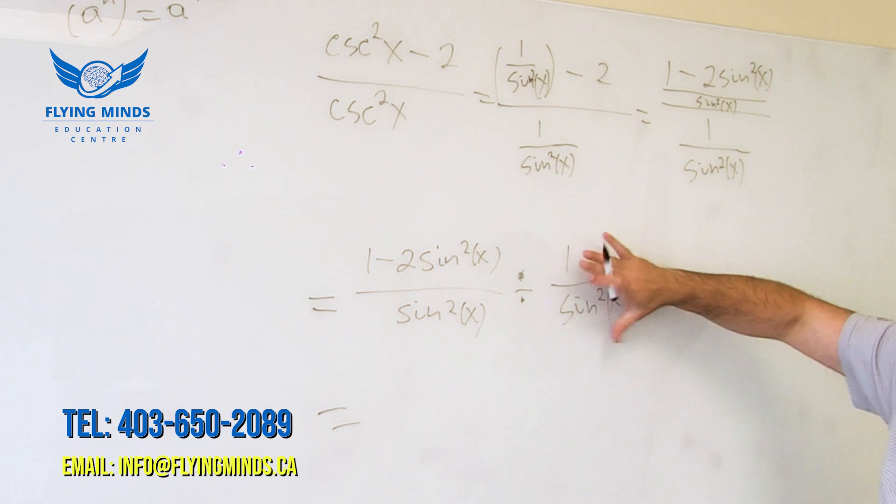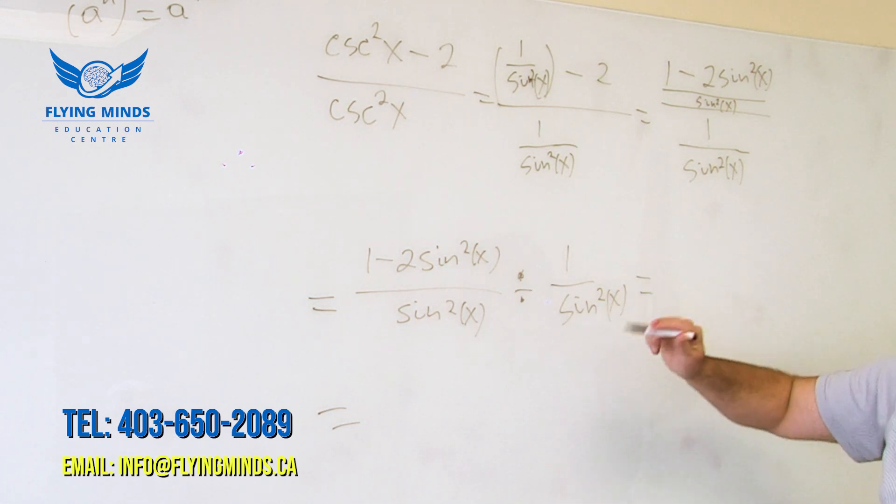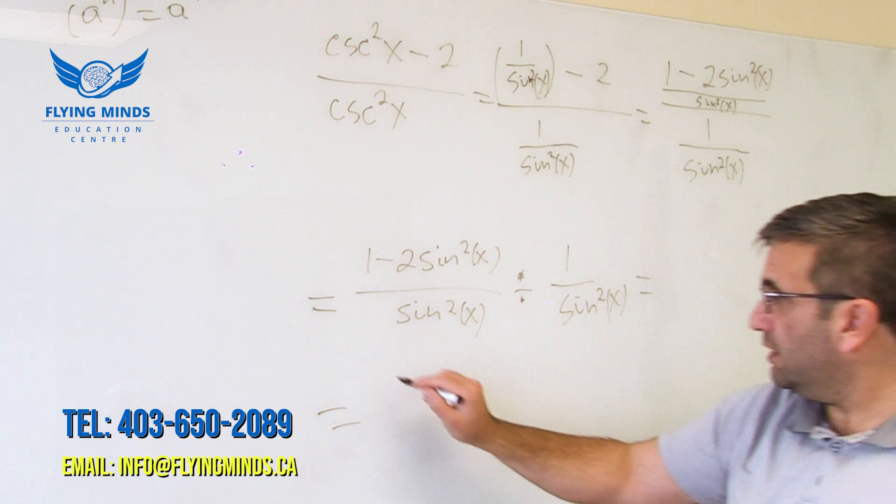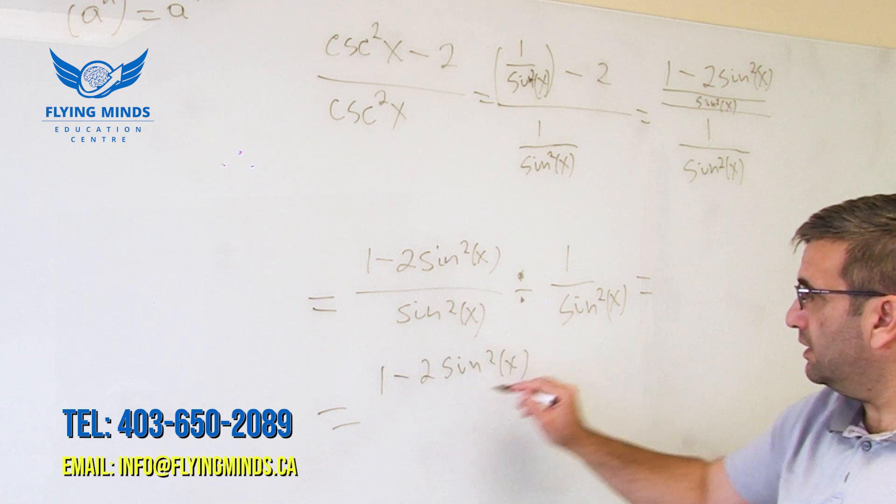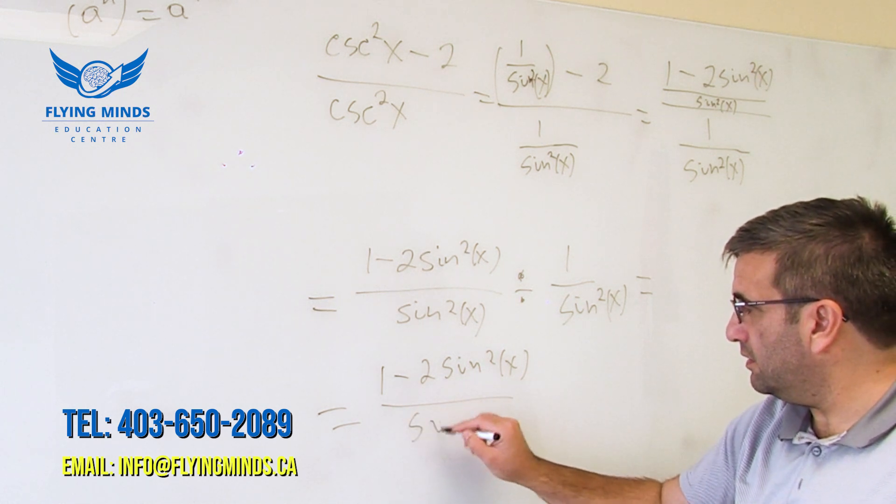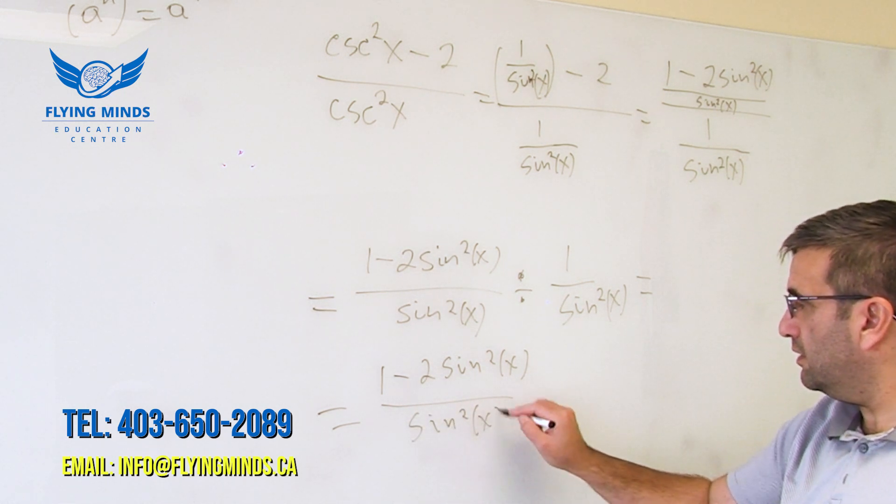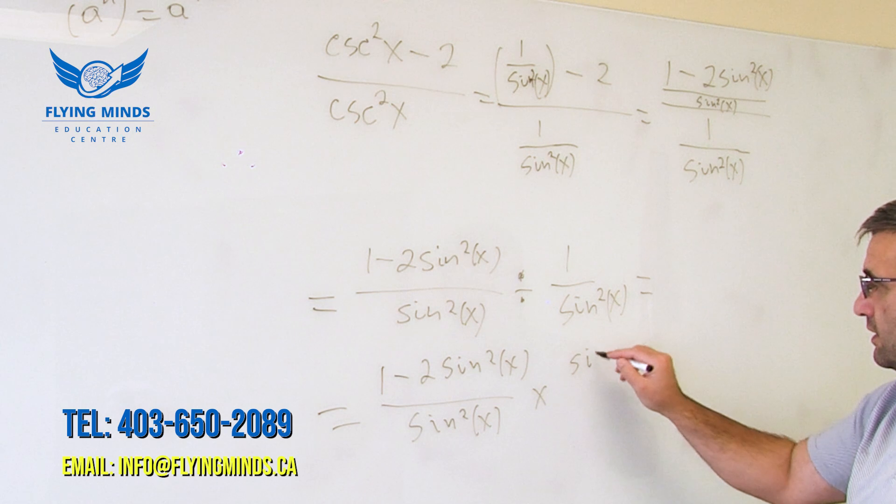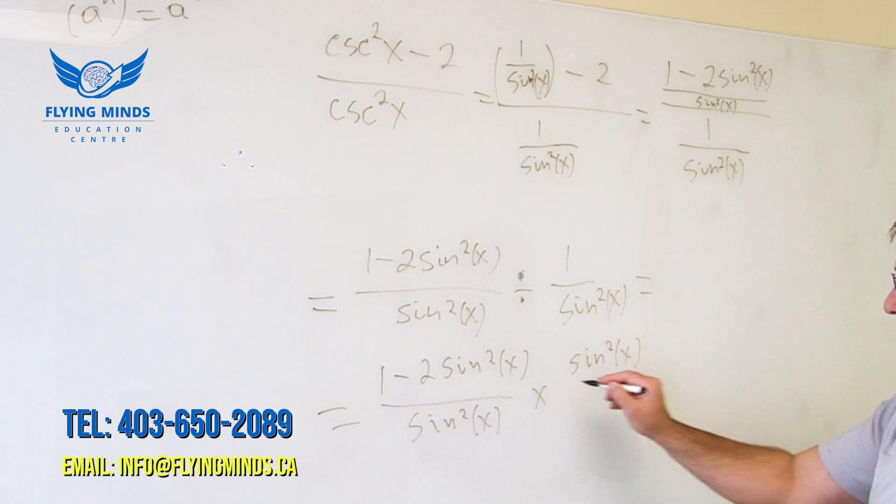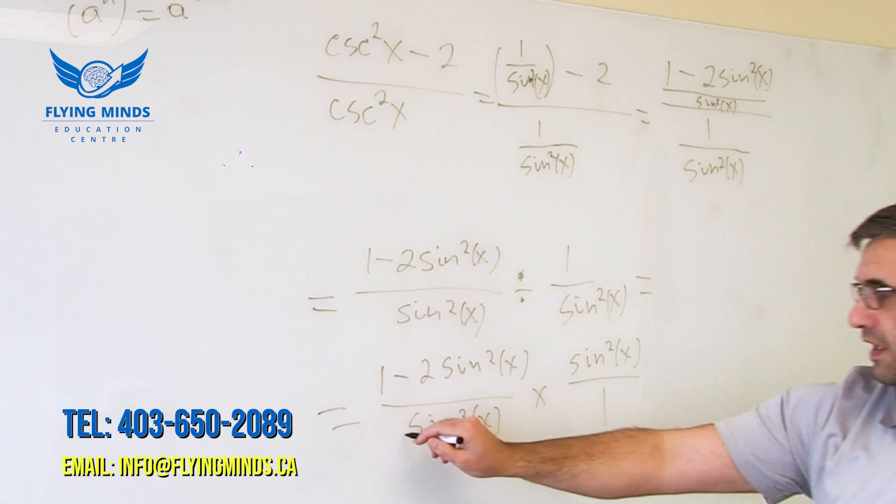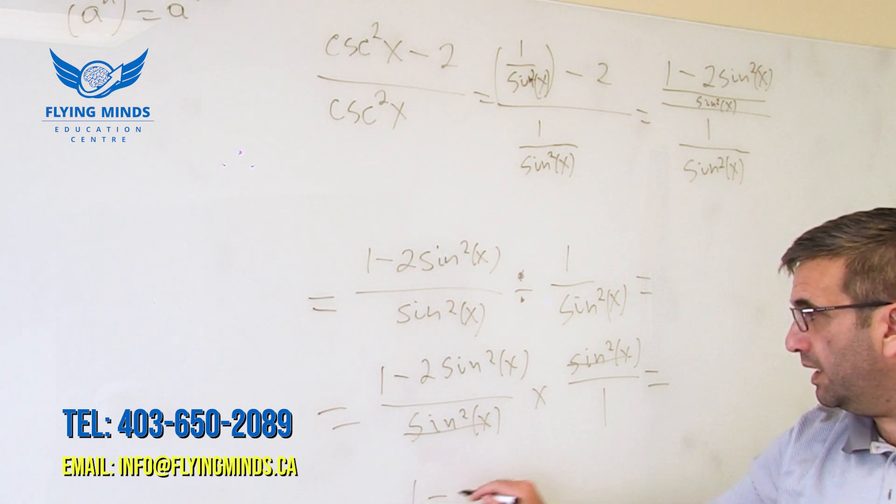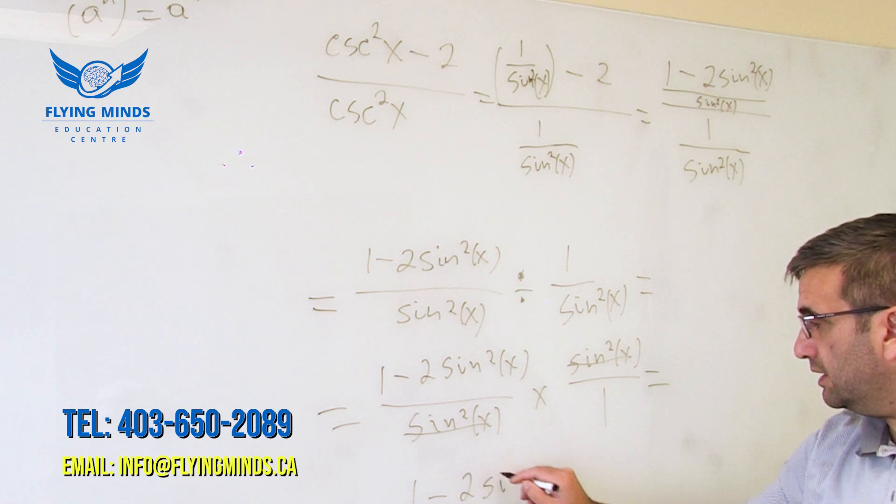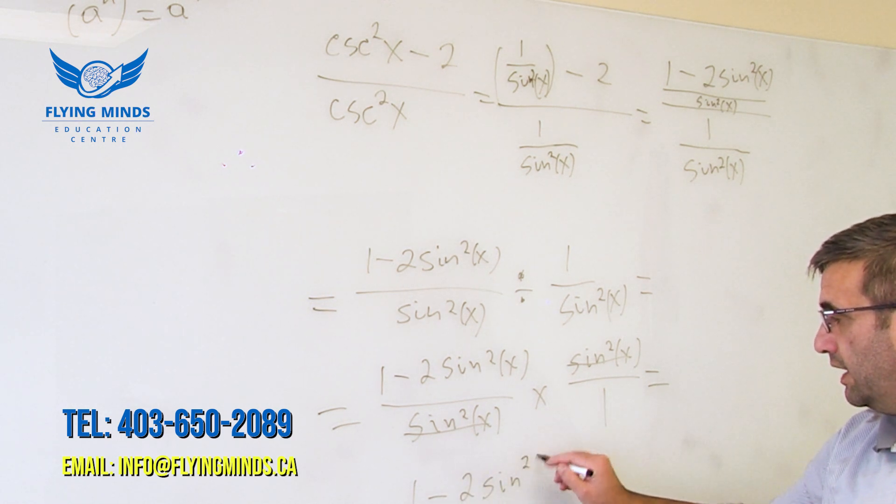So when we replace it with multiplication, this fraction switched, right? So we have two sine times... then we can cancel these two terms. What's left? 1 minus 2 sine squared x.